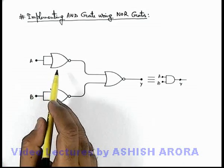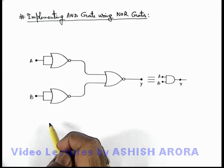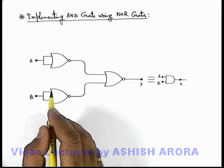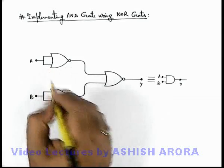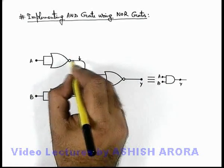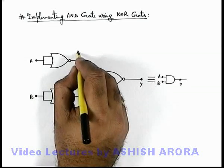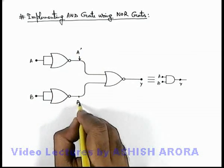Here you can see the first two NOR gates are used in inverted mode. When A and B are supplied to these two, the output at these first two inverters would be A prime and B prime.